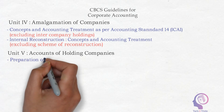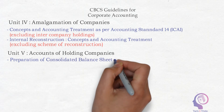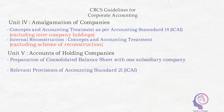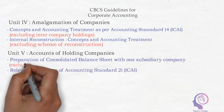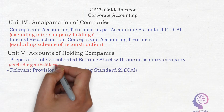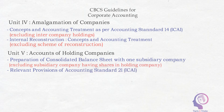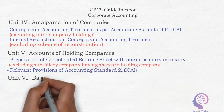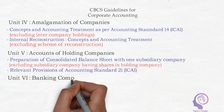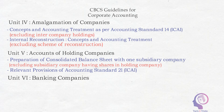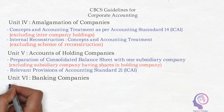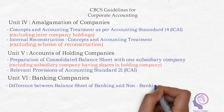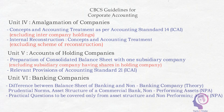For Unit 5, Holding Company, it is also a compulsory question. You have to study only the consolidated balance sheet with one subsidiary company only, along with the provisions of AS 21.